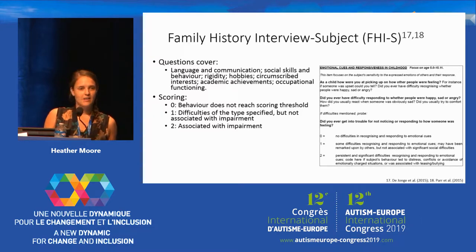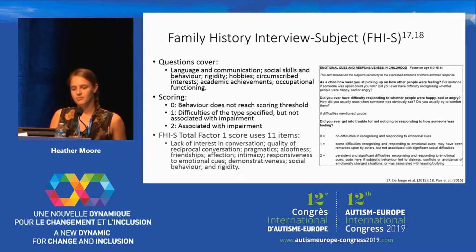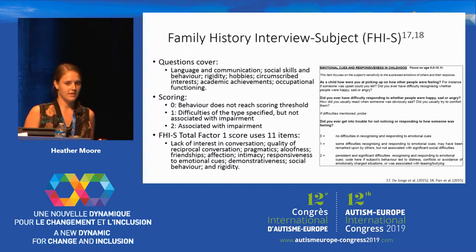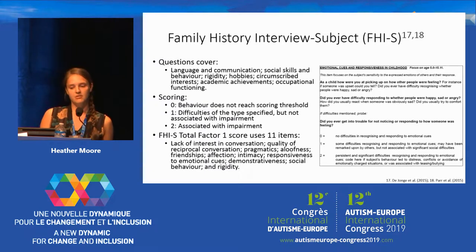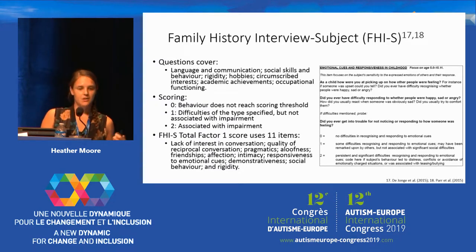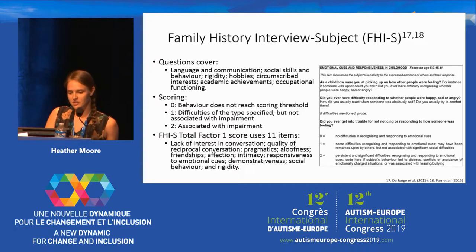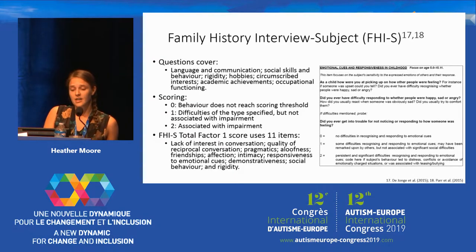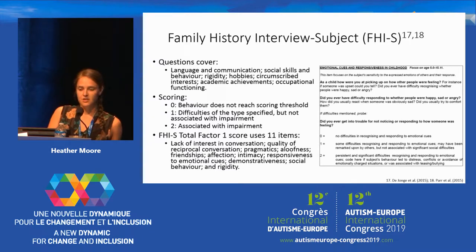From identifying the broader autism phenotype, a factor score was developed, derived that uses 11 items, including things like lack of interest in conversation, quality of reciprocal conversation, friendships, responsiveness to emotional cues, rigidity, and things like that.